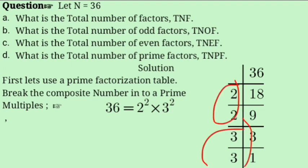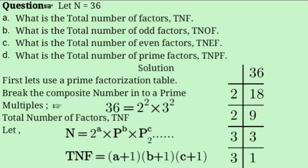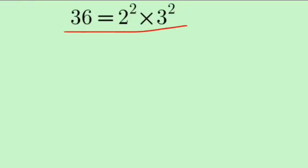Total number of factors is calculated using the formula: for a number P1 raised to A times P2 raised to B times P3 raised to C, we add 1 to each exponent and multiply. For 36 = 2² × 3², TNF = (2+1)(2+1) = 3 × 3 = 9.